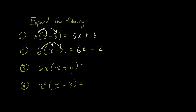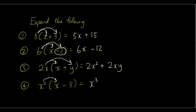You have to be careful when you have a minus sign in the middle — the sign stays with the number after it. So instead of doing 6 times 2, you do 6 times negative 2, which gives negative 12. For the third one: 2x times x is 2x squared, and 2x times y is 2xy. For the last one: x squared times x is x cubed, and x squared times negative 3 is minus 3x squared.